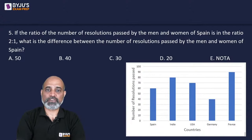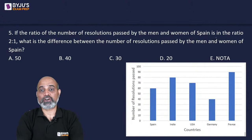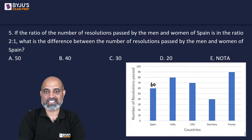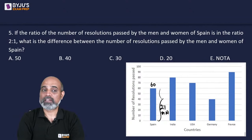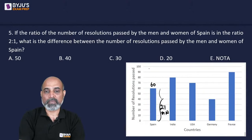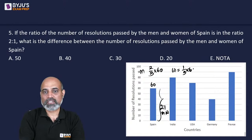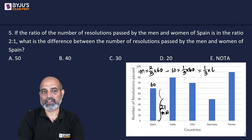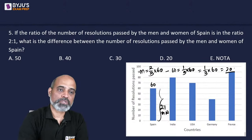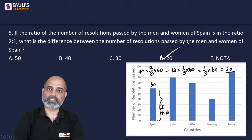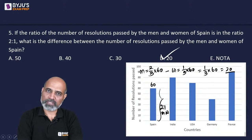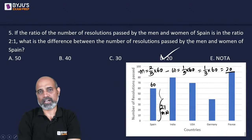Next: if the ratio of resolutions passed by men and women of Spain is 2:1, what is the difference between the number of resolutions passed by men and women of Spain? Spain's total is 60. Men = 2/3 × 60 = 40, women = 1/3 × 60 = 20. The difference is 1/3 × 60 = 20. The answer is option D. Basic arithmetic applied here in the bar graph DI.